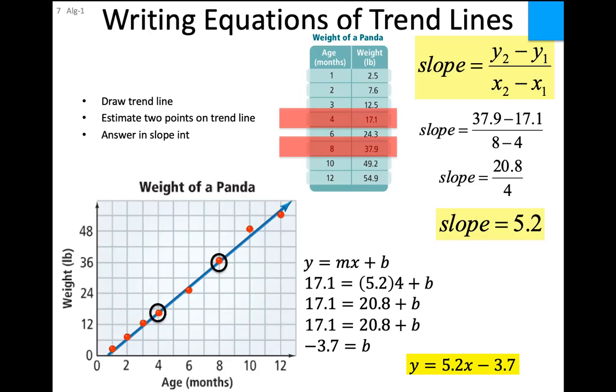E-learners, anybody live today? What was the name for the data outside the existing range? Extrapolation.